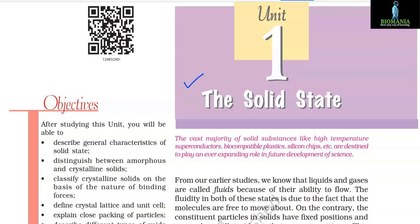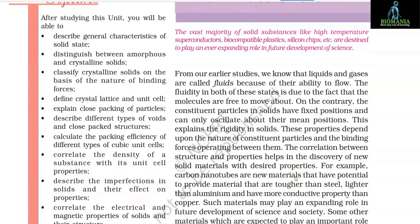Unit 1: The Solid State. The vast majority of solid substances like high temperature superconductors, biocompatible plastics, and silicon chips are designed to play an ever-expanding role in future development of science. From our earlier studies, we know that liquids and gases are called fluids because of their ability to flow. The fluidity in both these states is due to the fact that molecules are free to move about. On the contrary, constituent particles in solids have fixed positions and can only oscillate about their mean positions — this explains the rigidity in solids.